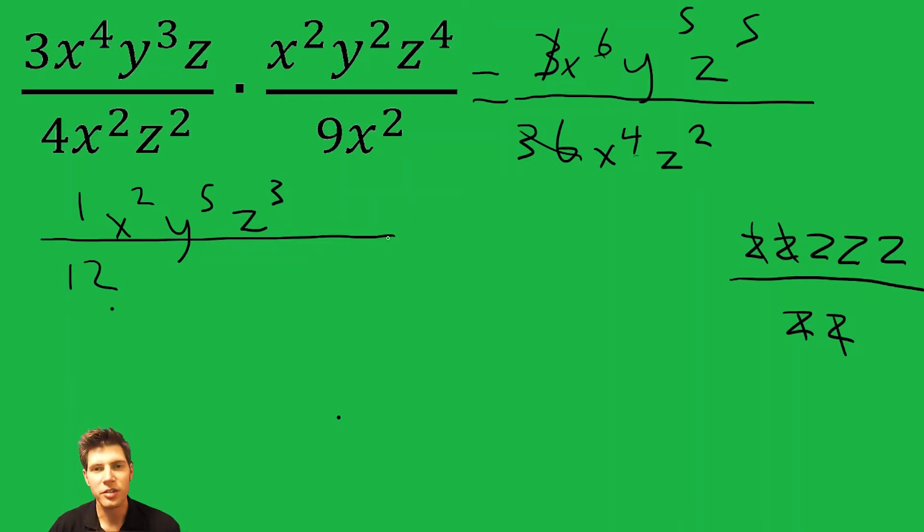That's where that comes from. So this is the final answer. We can clean it up and just say x squared y to the 5th z cubed over 12. It's the same thing as what's written over there, but it just looks a little cleaner.